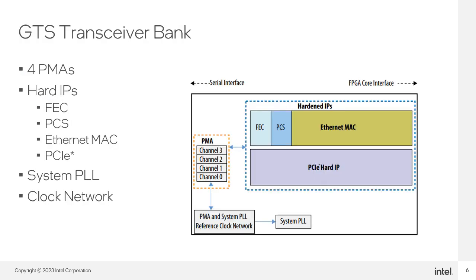The GTS transceiver bank is the main building block of the transceiver. Each bank contains four PMA channels and four hard IPs: FEC, PCS, Ethernet MAC, and PCIe. The bank also has one system PLL and a reference clock network to provide reference clocks to the system PLL as well as other PMA channel PLLs. The reference clock network spans across multiple banks to allow sharing of clocks.